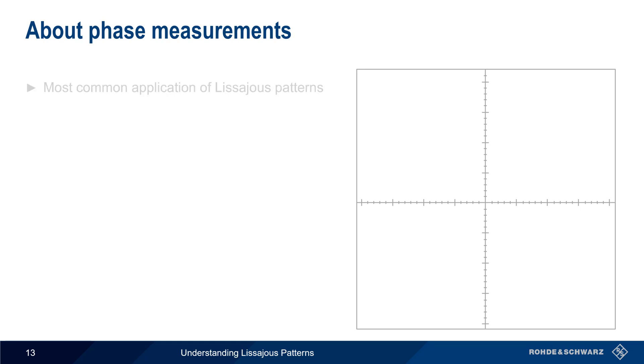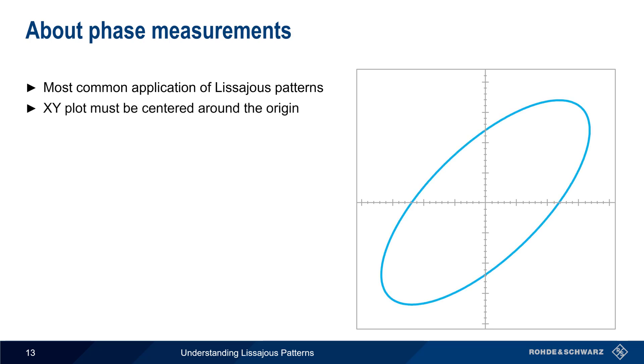Measuring the phase difference or offset between X and Y is the most common application of Lissajous patterns. In order to do this, the X-Y plot must be centered around the origin, and the signal voltage or amplitude must be the same on both channels.